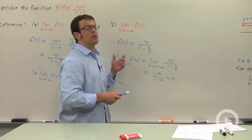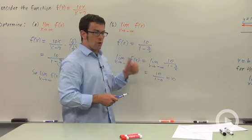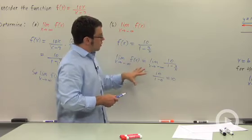Now what does it mean that the function's value approaches 10 as x approaches infinity or as x approaches minus infinity? Well, let's take a look at the graph.